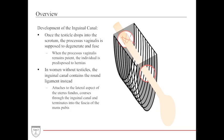In women, who do not have testicles, the inguinal canal contains another structure called the round ligament. The round ligament attaches to the lateral aspect of the uterus, courses through the inguinal canal, and terminates into the fascia of the mons pubis.